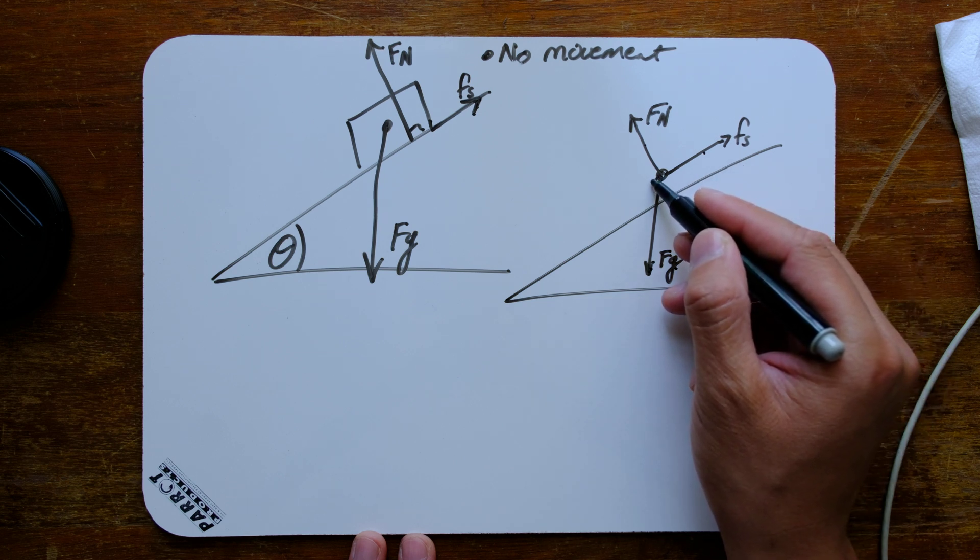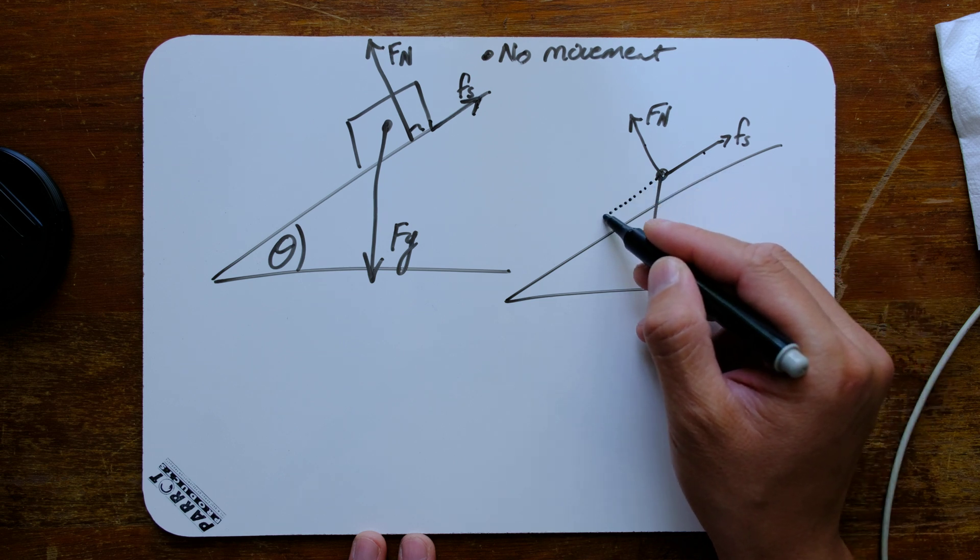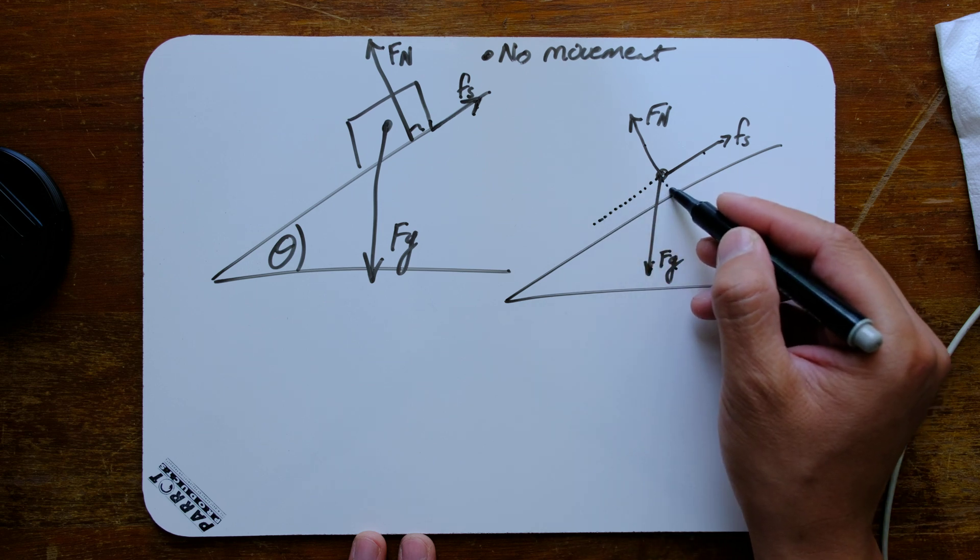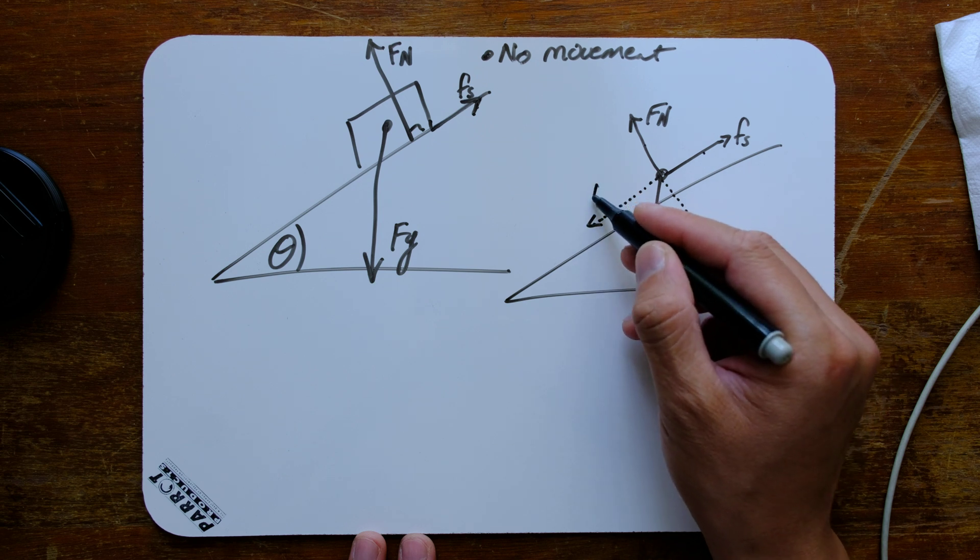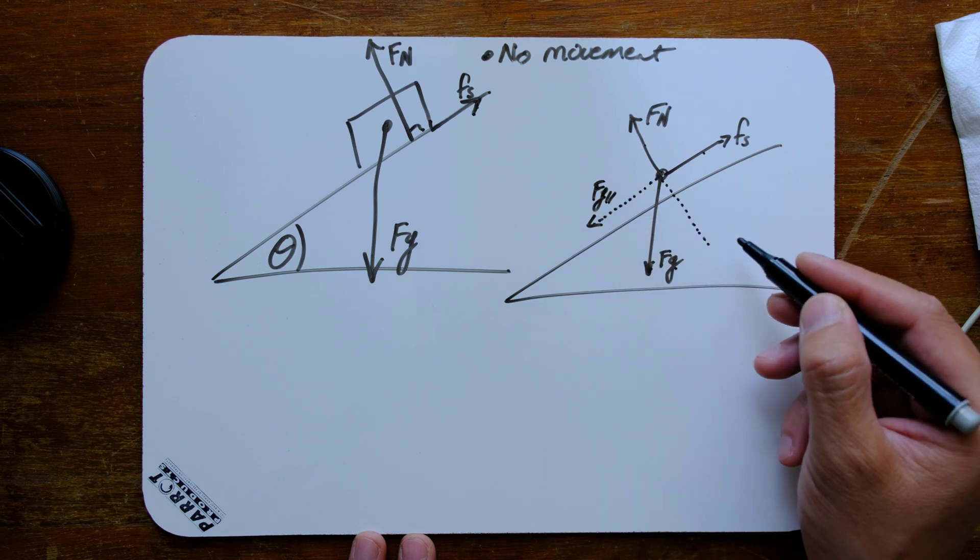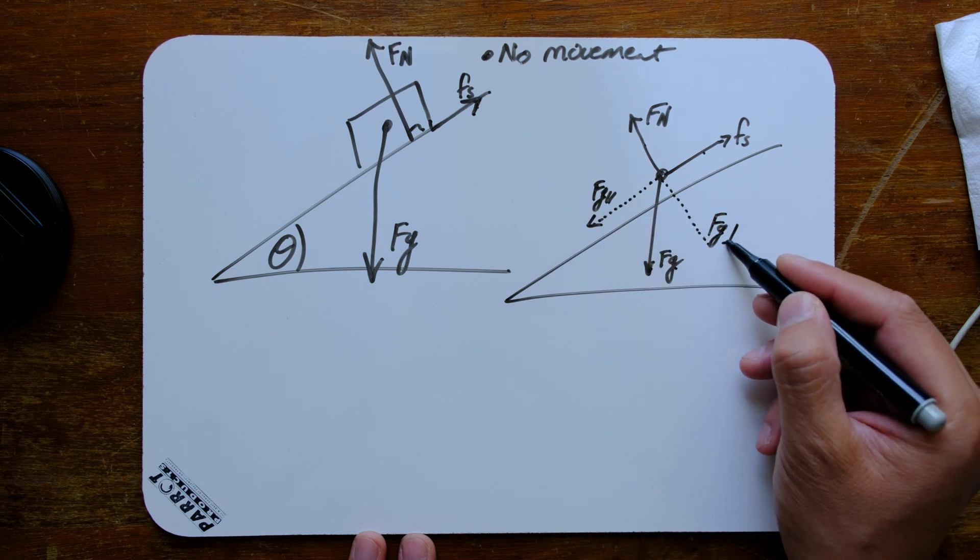So that means we go into a parallel component with the plane and a perpendicular component to the plane. So therefore we call that fg parallel and fg perpendicular.